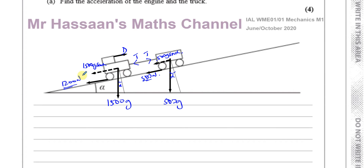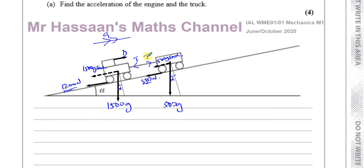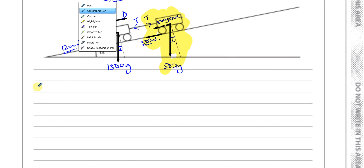All we need to consider are the forces acting parallel to the plane and parallel to the movement. We know the system is accelerating up the track — that's what we find in part A. Since we don't know D, we consider just the truck, for which we know all the forces. Taking up the plane as positive, I'm going to consider the forces acting on the truck alone.